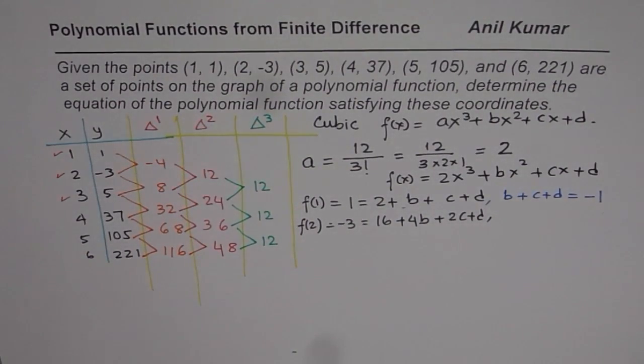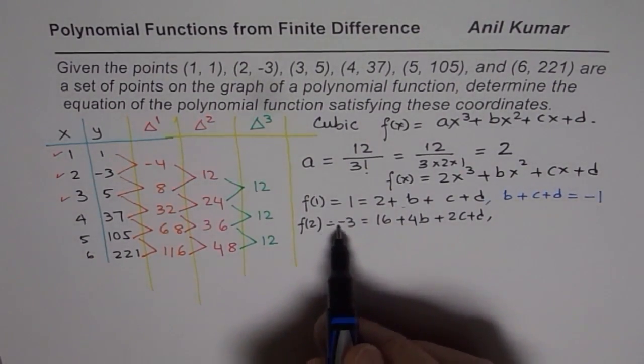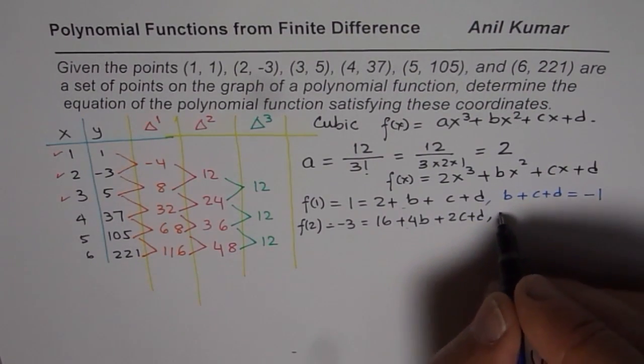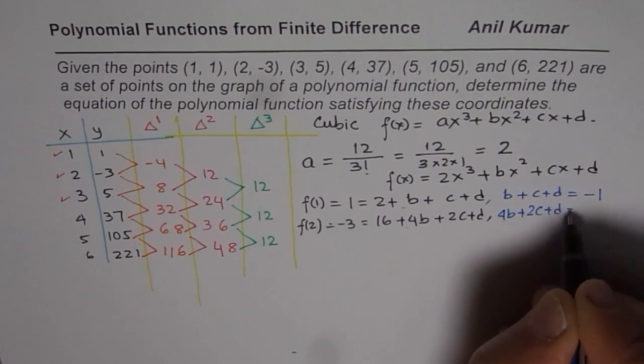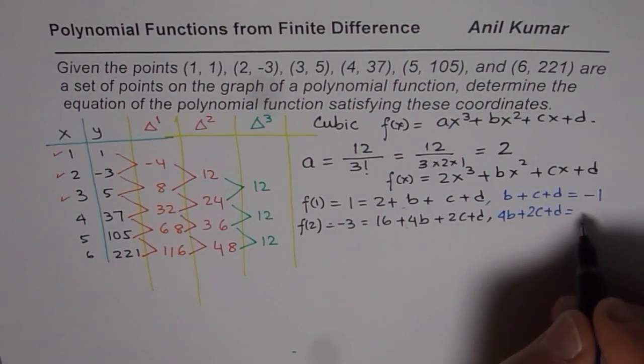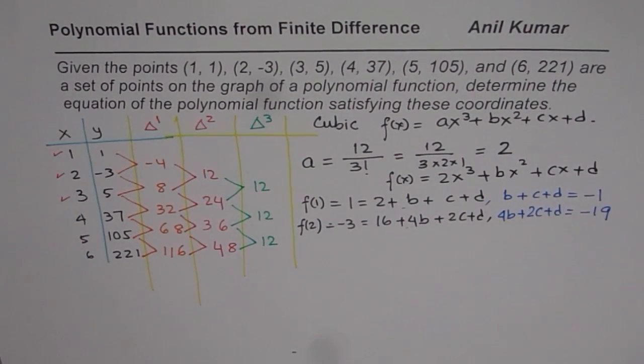Now this could be simplified a bit, taking 16 on this side. So we get 4b + 2c + d equals -3. When I take 16, I get -19.